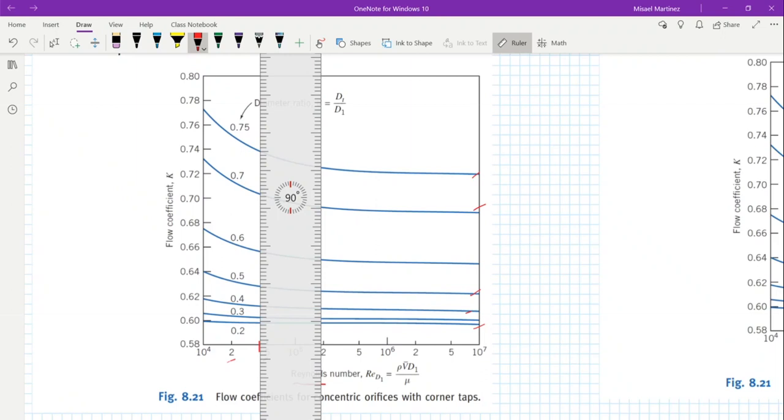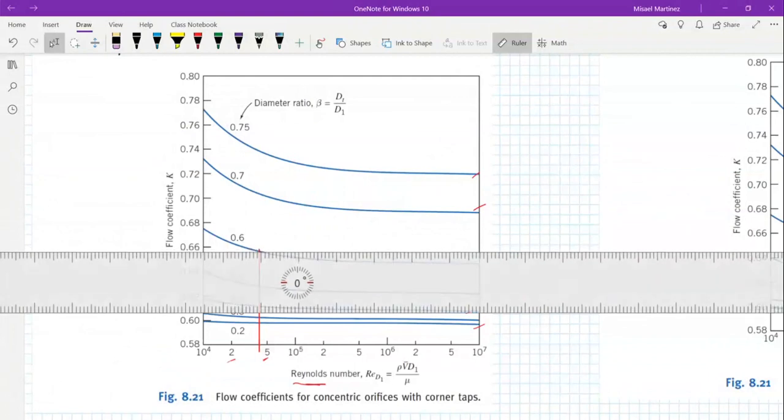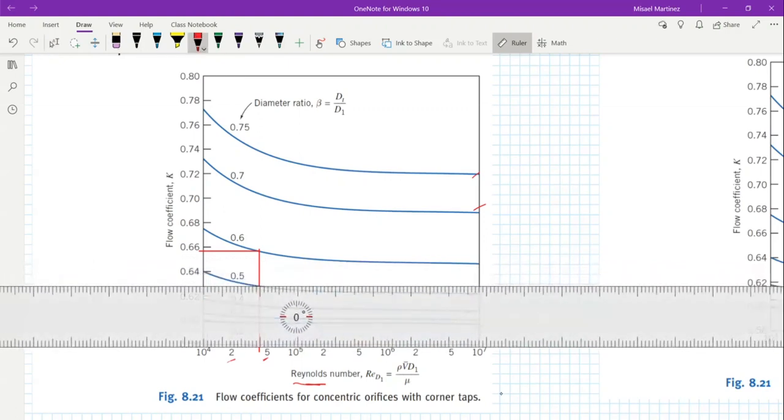We have our already selected Reynolds, 41,000. Let's say we're using a beta of 0.6. You can just make a guess. It doesn't really matter which one you choose. Using that beta, we're going to move all the way to the left to find our k value. You can see we are somewhere below 0.66. Let's say that with our beta of 0.6, our corresponding k value is about 0.655.